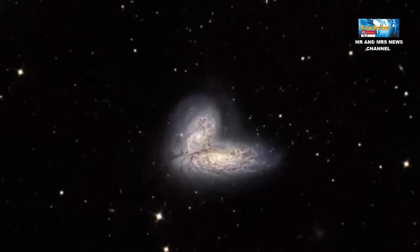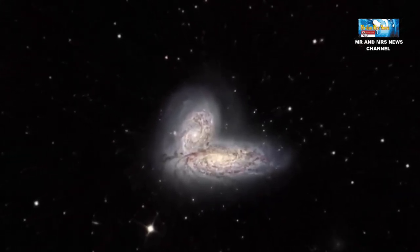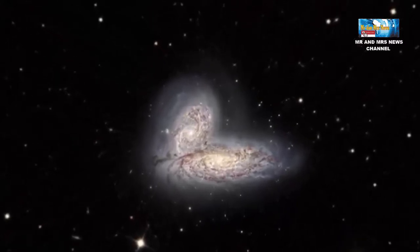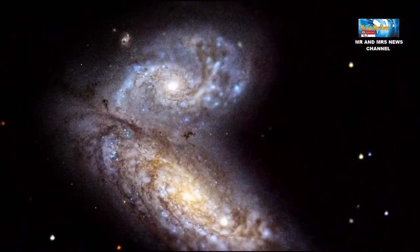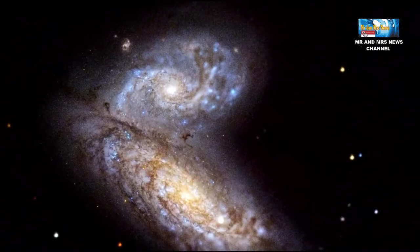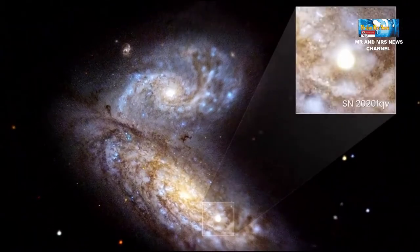Dua galaksi spiral berjarak sekitar 60 juta tahun cahaya dari bumi. Para astronom di teleskop Gemini North di Hawaii telah merilis gambar menakjubkan yang menunjukkan dua galaksi spiral dalam proses tabrakan dan penggabungan.